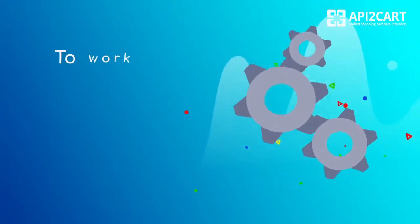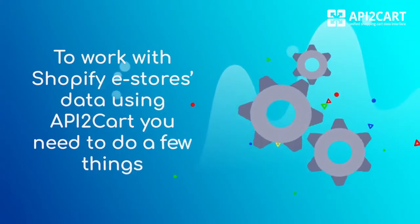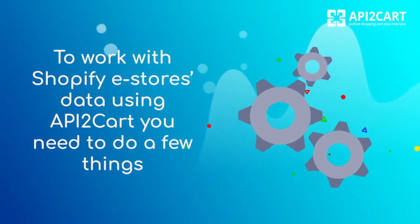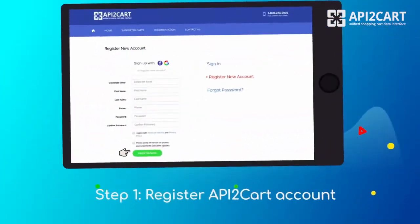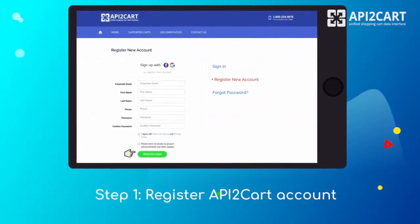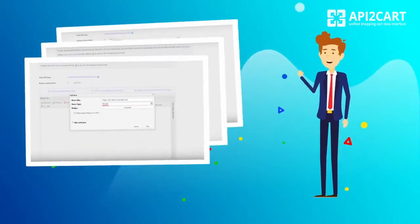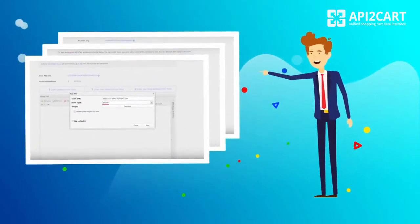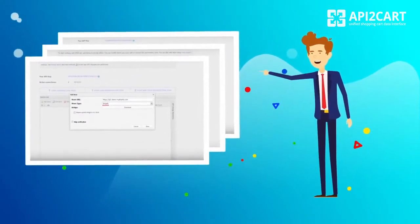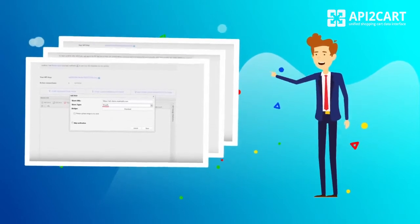To work with Shopify eStore's data using API2Cart, you need to do a few things. Step 1: Register an API2Cart account. Step 2: Add a store based on Shopify manually or automatically via API request using the account cart add method.